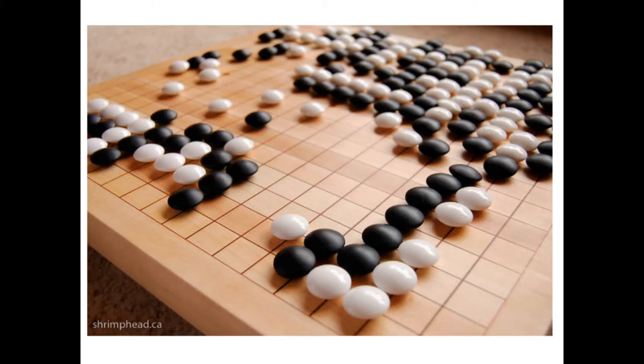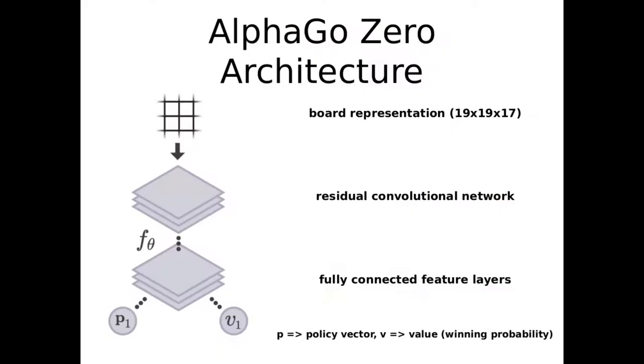Let's understand AlphaGo Zero. AlphaGo Zero doesn't use any handcrafted features, no handcrafted rewards and no human training data. This means AlphaGo Zero learns entirely from scratch using self-play only. Note that Go is a perfect information game and we have a perfect simulator, which both we often don't have in the real world.